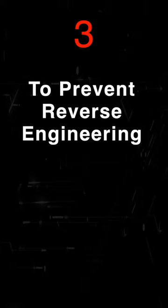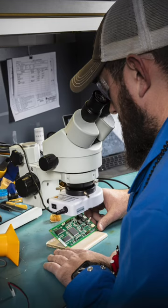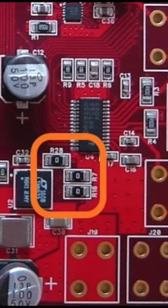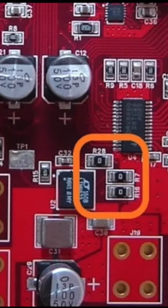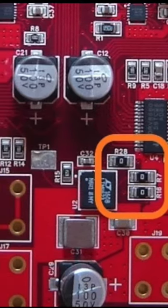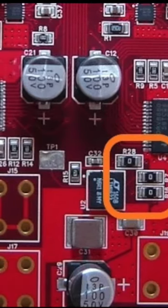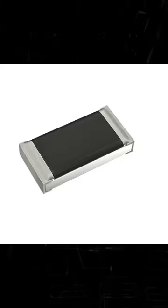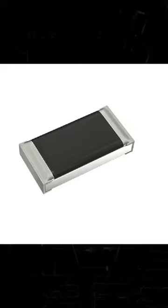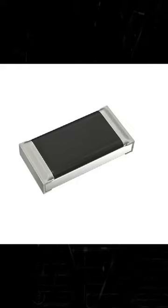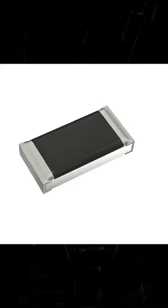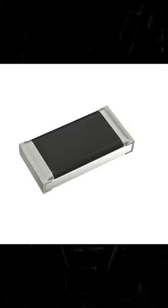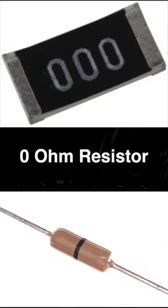Number three is for preventing reverse engineering. By placing a zero ohm resistor on certain tracks, we can mislead others from copying our design. And if possible, one should use a zero ohm resistor with no markings. So these are the three main reasons for using the zero ohm resistor.